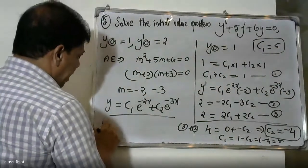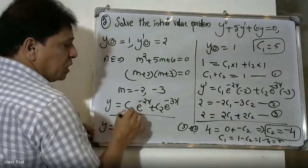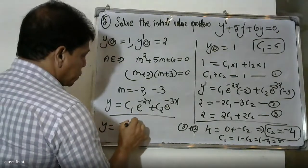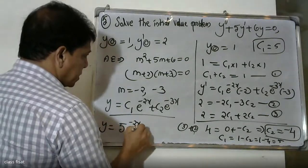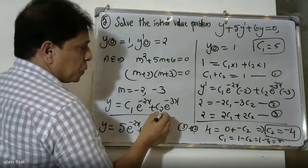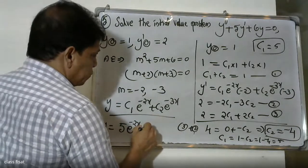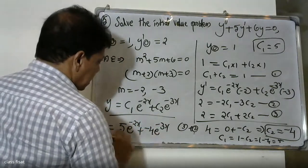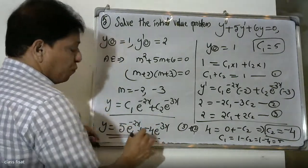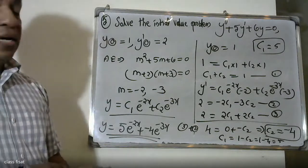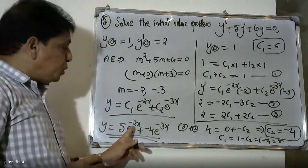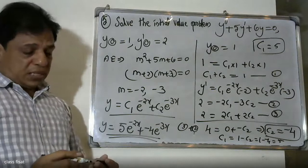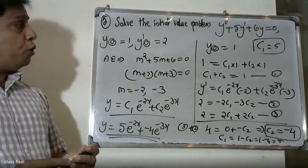Therefore the final answer is y equals five into e raised to minus two x plus minus four into e raised to minus three x. That is y equals five e raised to minus two x minus four e raised to minus x.